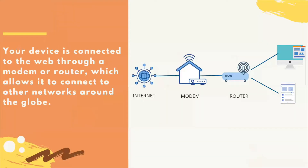Firstly, note that your devices are connected to the web through a modem or a router, which allows it to connect to other networks around the world. A router creates a network between the devices in your home, while a modem connects this network to the internet.